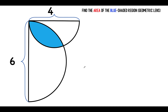Let's begin by locating and labeling their centers and the point of intersection as S, and this corner point here as R. Then let's connect center O to the point of intersection S, then connect center P to the same point of intersection. We now form here a kite.